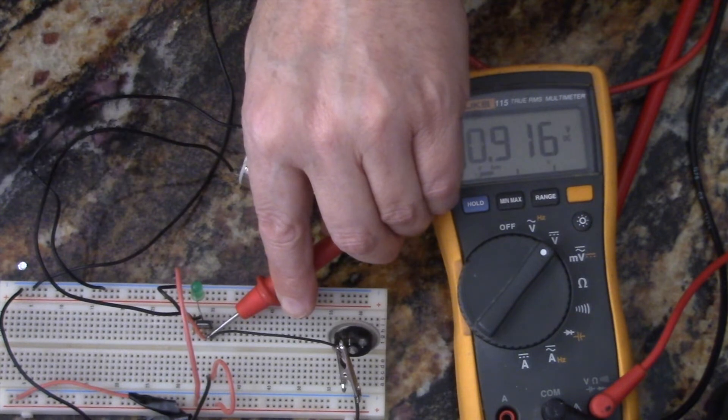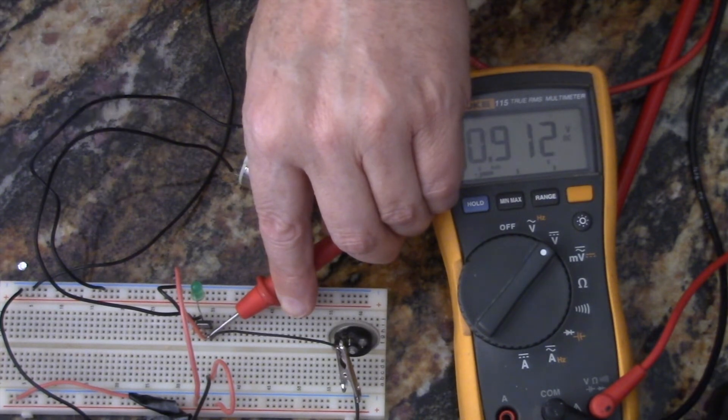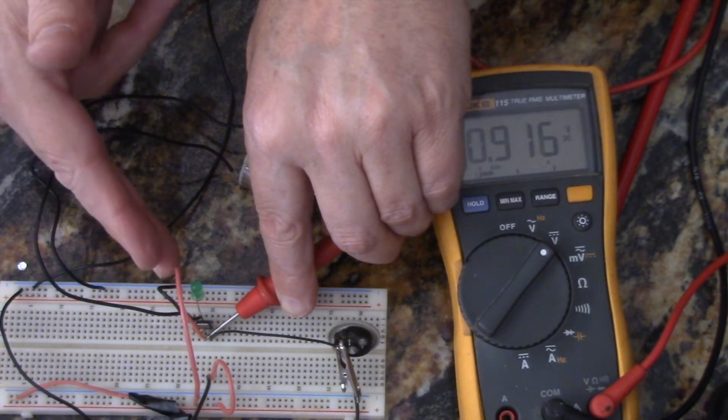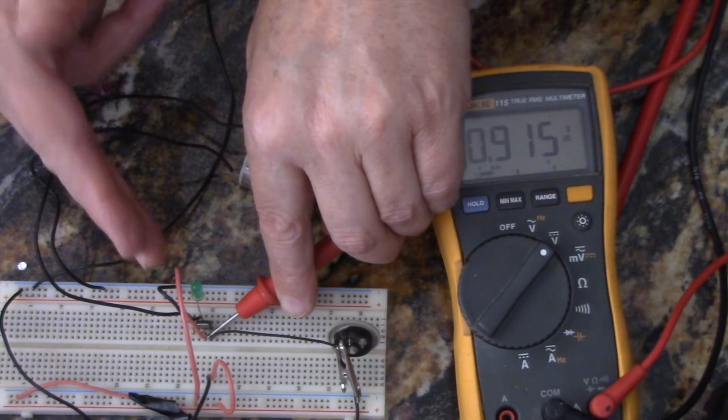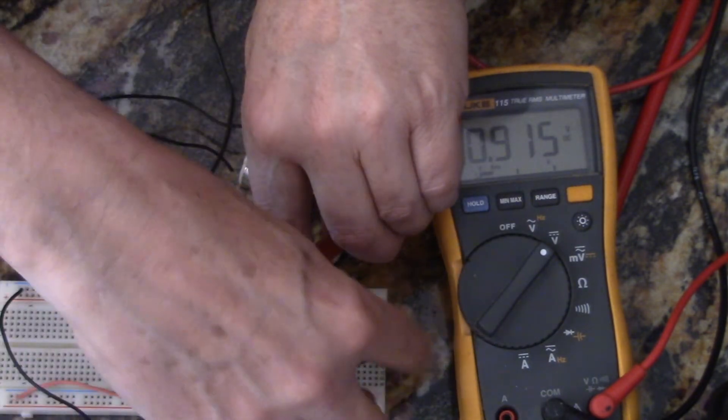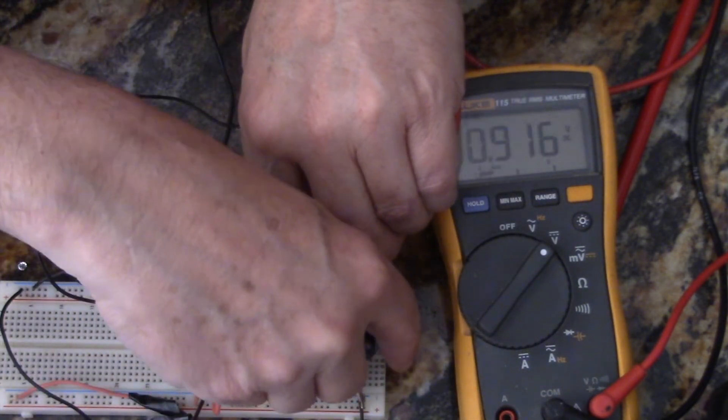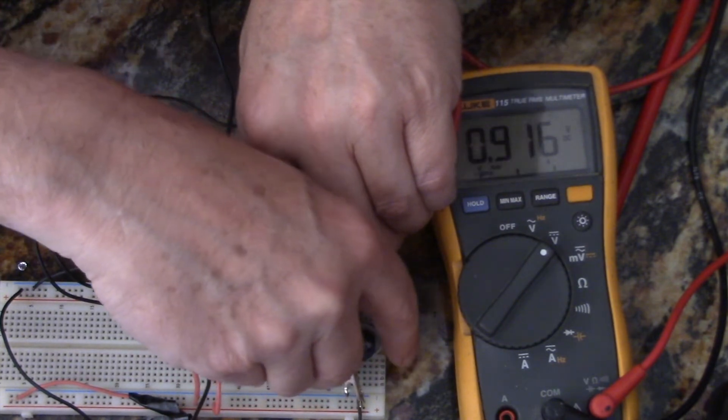Each IGBT has a threshold voltage, a minimum threshold voltage. When you meet that minimum threshold voltage, then it effectively turns the transistor on. And so this one is at approximately a volt.